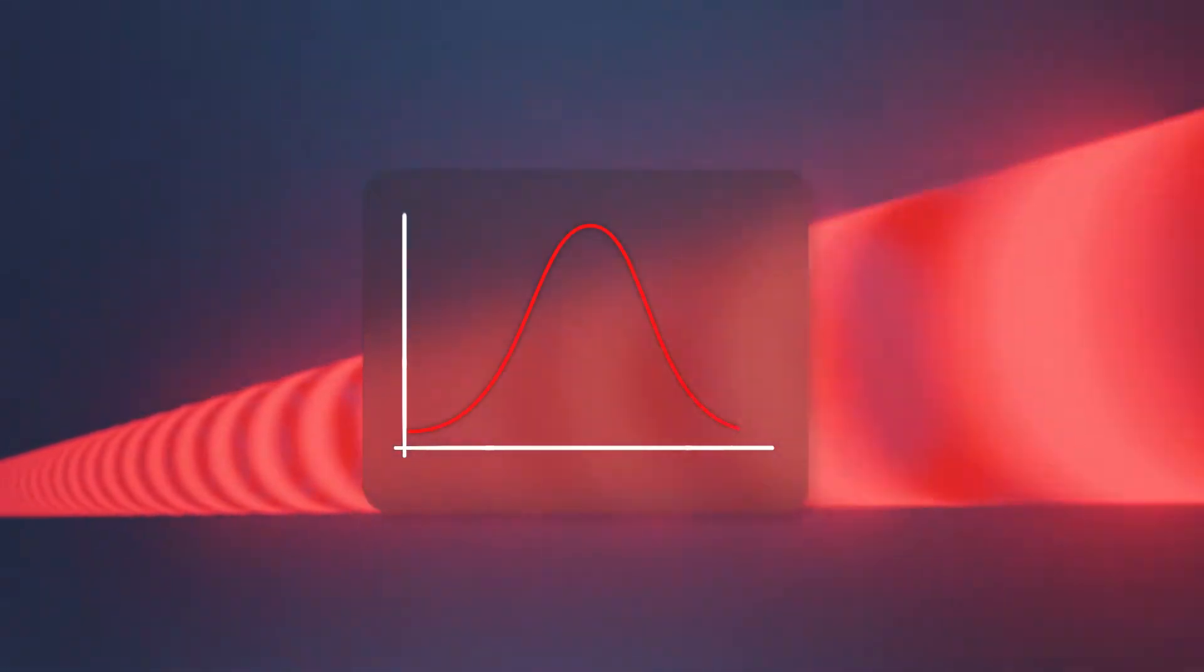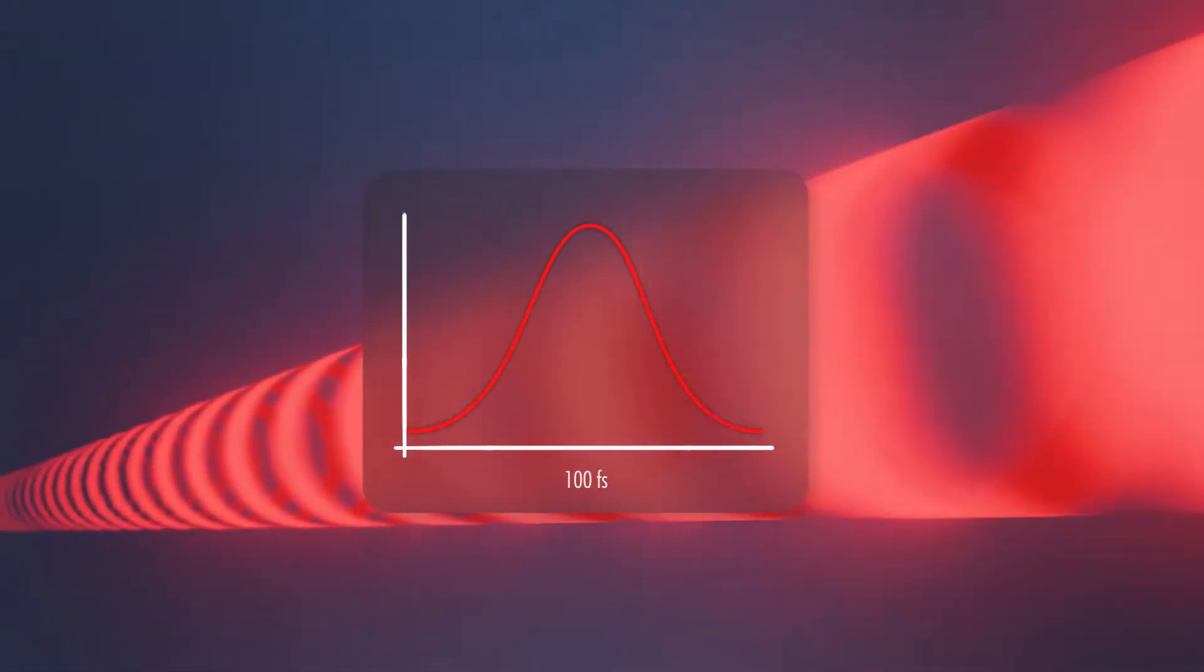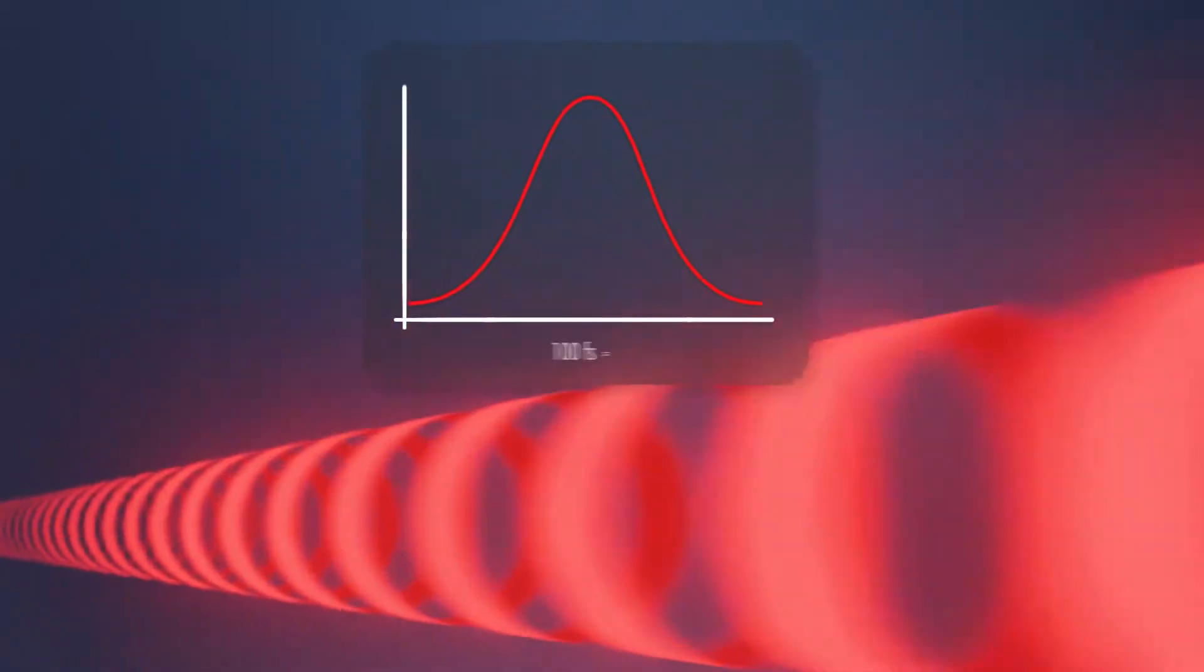Ultra-fast lasers are pulsed laser sources that emit unimaginably short laser pulses. The duration of the emitted pulses are in the range of some hundred femtoseconds. This is 10 to the minus 13 seconds.